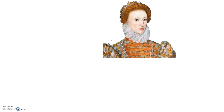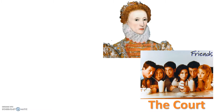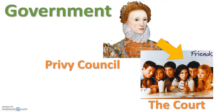In 1558 most Elizabethan life centred around the court. These are Elizabeth's friends and the leading nobles of the country. The elite of these formed Elizabeth's Privy Council — the nobles who helped Elizabeth to run the country. If the court are her friends and acquaintances, then the Privy Council are her best friends and most trusted advisors.